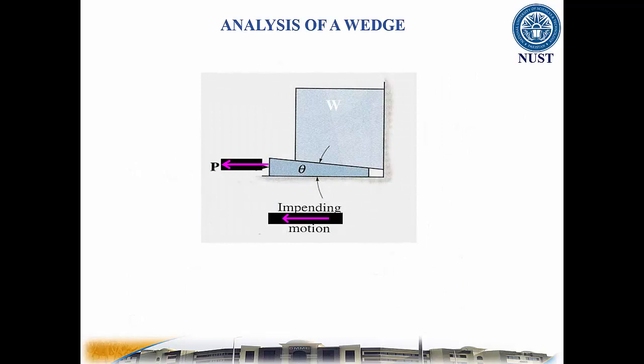Note that if the object is to be lowered, then the wedge needs to be pulled out. If the value of the force P needed to remove the wedge is positive, then the wedge is self-locking, meaning it will not come out on its own.